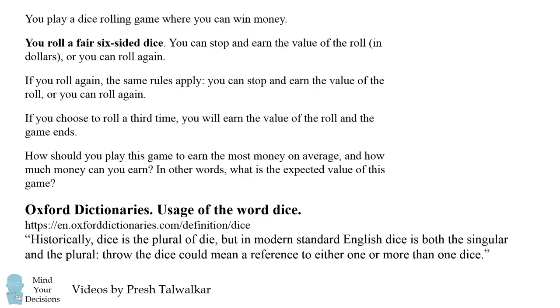Historically, dice is the plural of die. But in modern standard English, dice is both the singular and the plural. Throw the dice could mean a reference to either one or more than one dice. So it is perfectly correct to say you roll a fair six-sided dice.